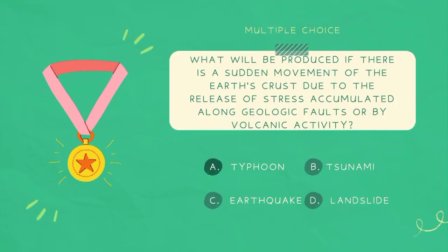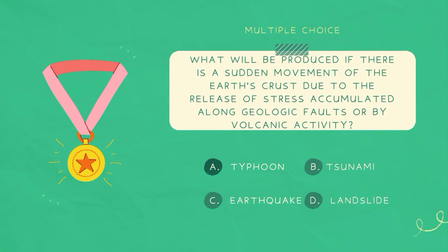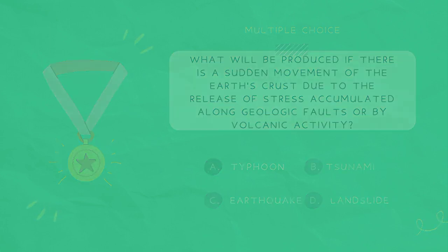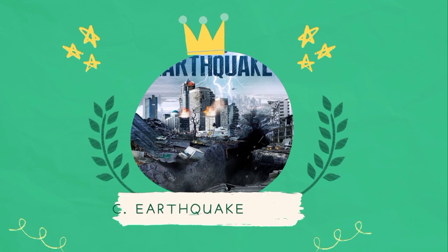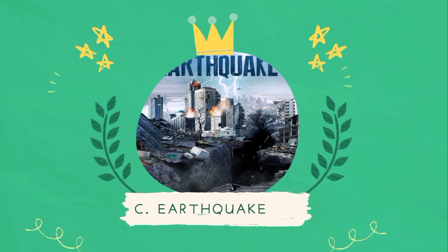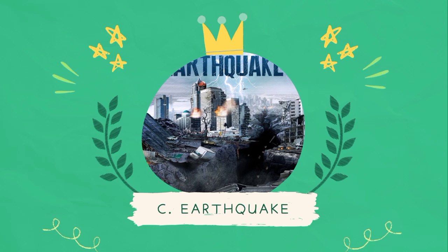What will be produced if there is a sudden movement of the earth's crust due to the release of stress accumulated along geologic faults or by volcanic activity? A. Typhoon. B. Tsunami. C. Earthquake. D. Landslide. The answer is C. Earthquake.